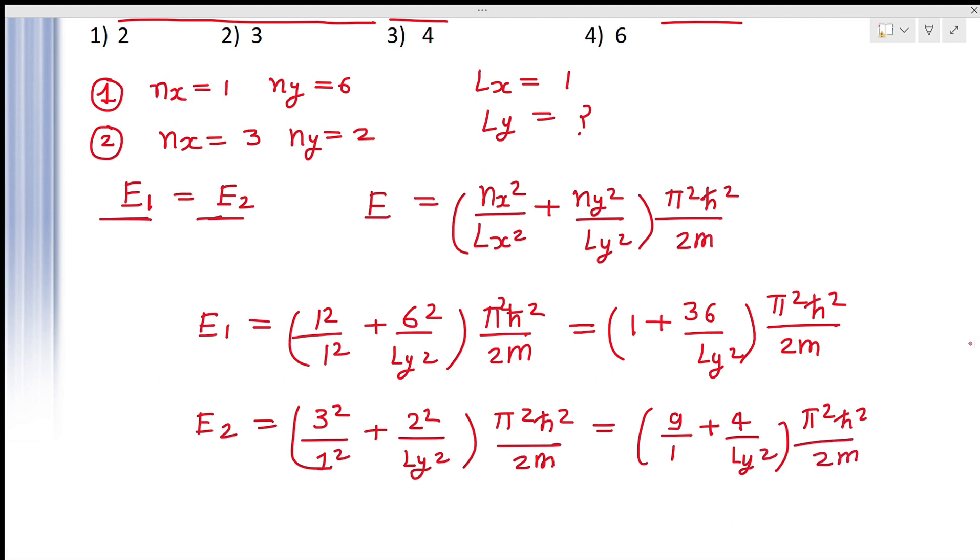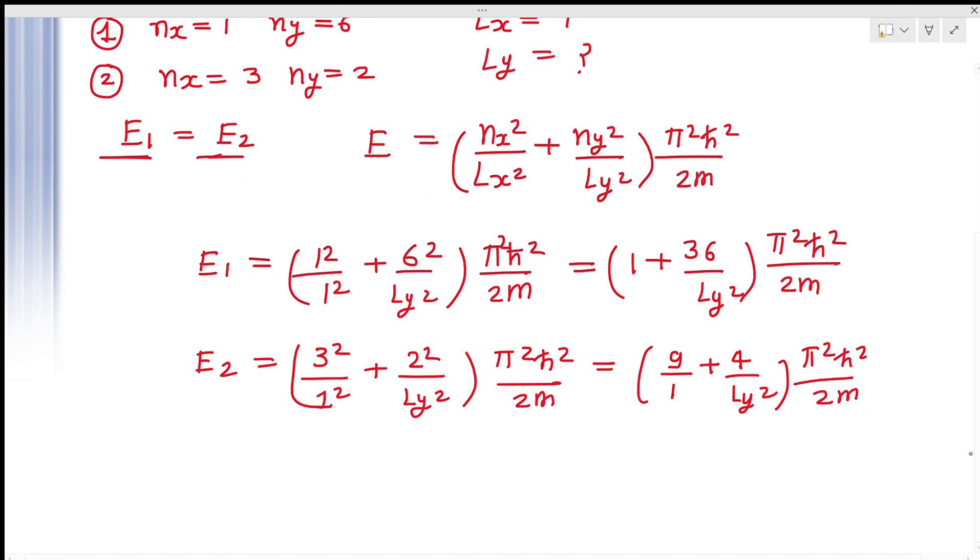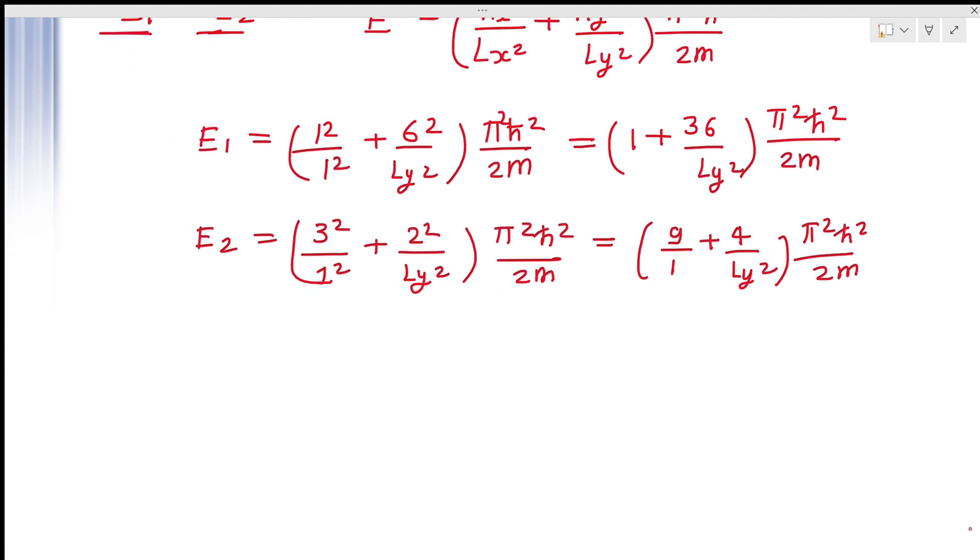Now, these two levels are degenerate. It means E1 is equal to E2. So we can equalize these two equations. It means we can write 1 plus 36 upon LY square, and this I am writing down. As you can understand, pi square h cross square upon 2m will be equal to 9 plus 4 upon LY square, pi square h cross square upon 2m.